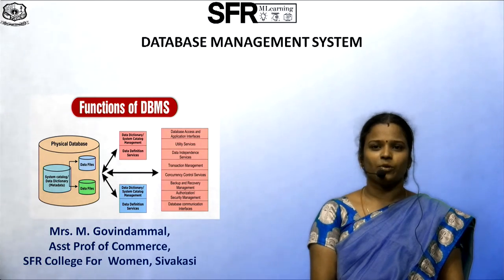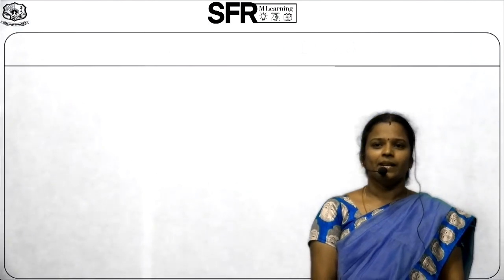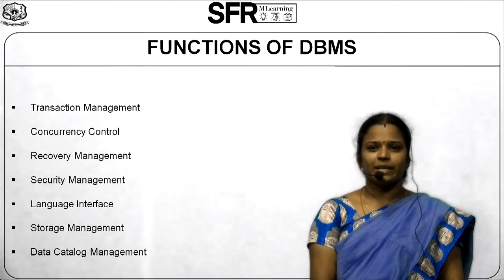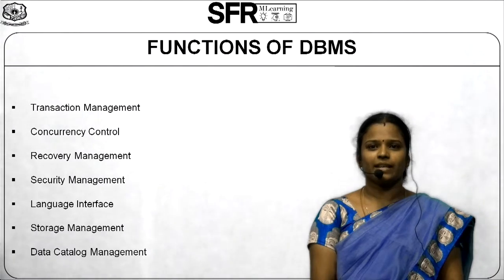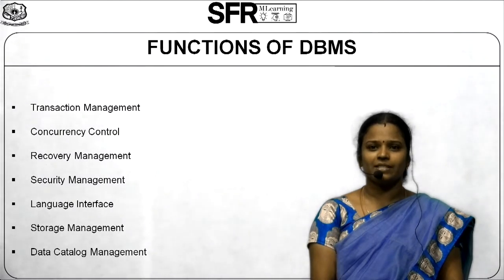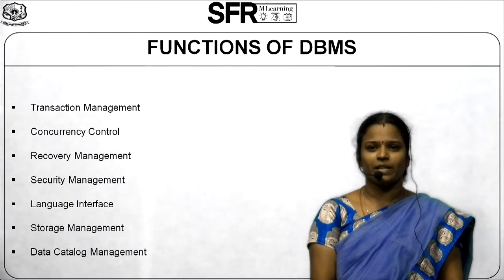Now I am going to discuss about functions of DBMS. Functions can be classified into several types. First one, Transaction Management. Second, Concurrency Control. Third one, Recovery Management. Fourth one, Security Management. Fifth one, Language Interface. Sixth one, Storage Management. Seventh one, Data Catalog Management.